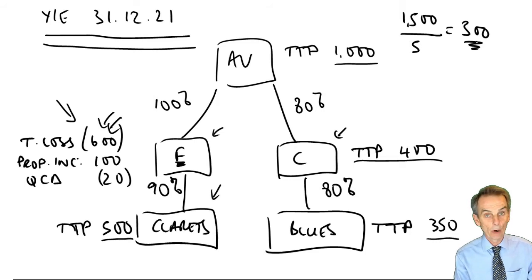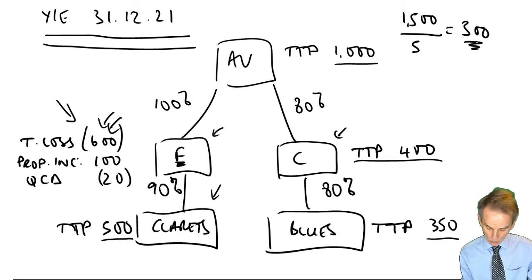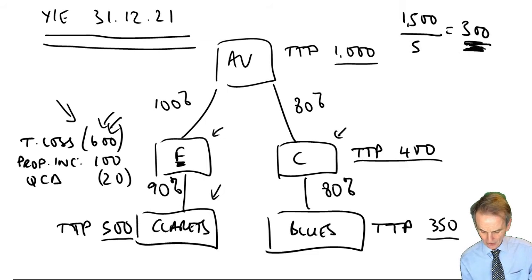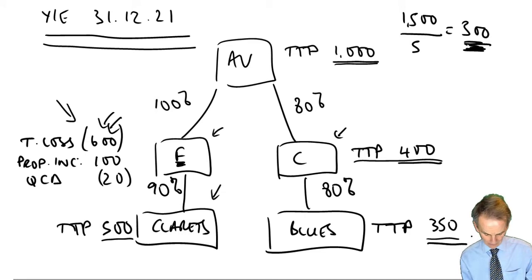What do we mean by profit? We mean TTP — taxable total profit — the figure we compute at the bottom of a corporate tax computation. To give us the profit figure, sometimes known as augmented profit, we add to the TTP any dividends received from non-subsidiary companies. Dividends received from subsidiary companies are ignored for this purpose. We then compare that profit figure for each company to the relevant profit limit of £300,000.